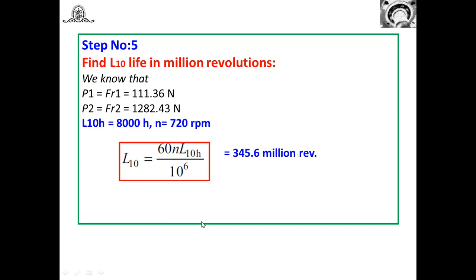Before calculating dynamic load capacity, we convert the life from hours to million revolutions using: L10 = (60 × n × L10h) / 10⁶. Substituting n = 720 rpm and L10h = 8000 hours gives L10 = 345.6 million revolutions. This represents the L10 life, meaning 90% of bearings survive without failure.